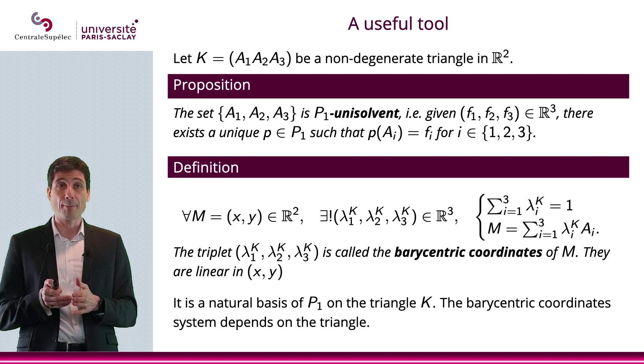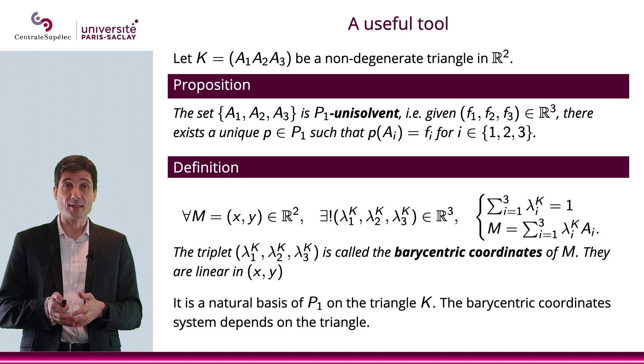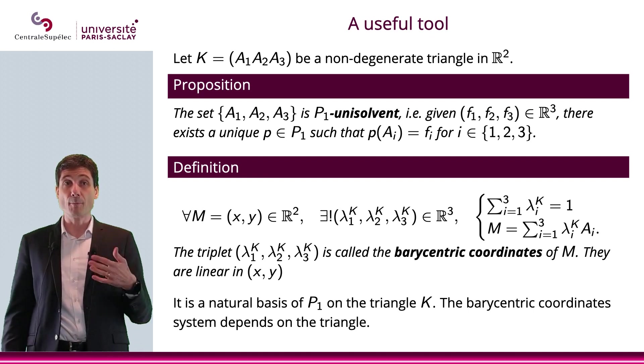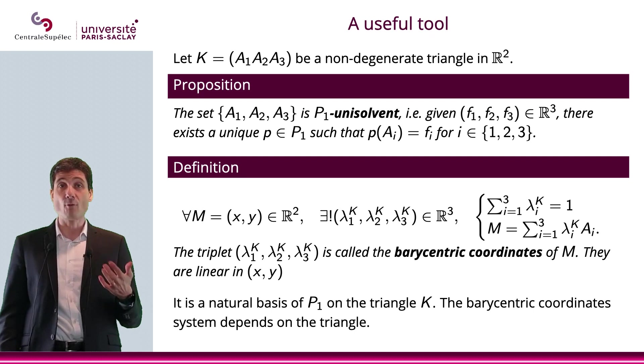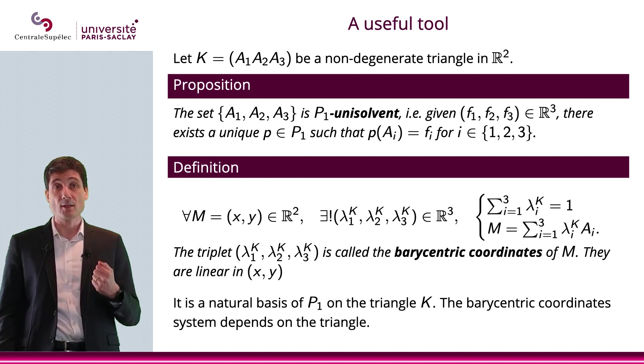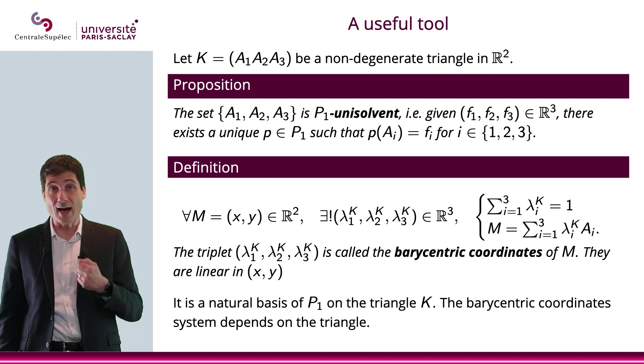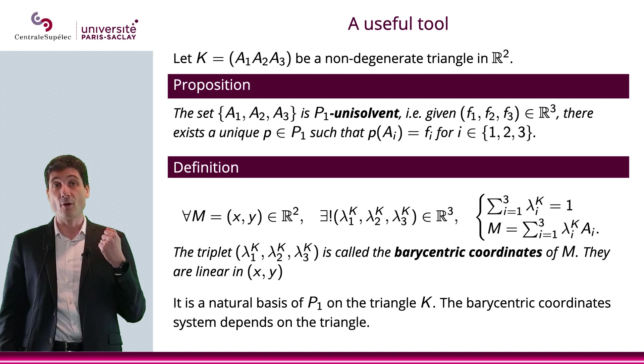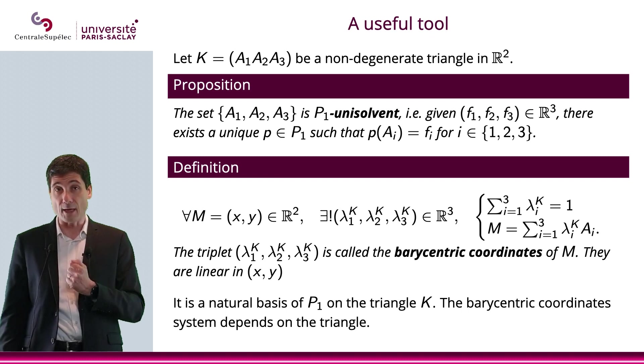Then basically what we're saying is that A1, A2, A3 will be unisolvent, P1 unisolvent, if given F1, F2, F3 in R3, there exists a unique P in P1, a polynomial in P1, such that P applied to AI is Fi for I equals to 1, 2, or 3.